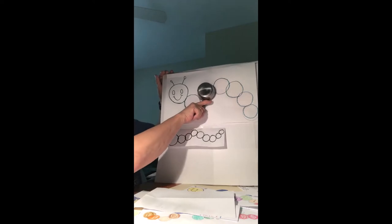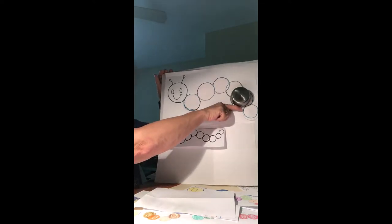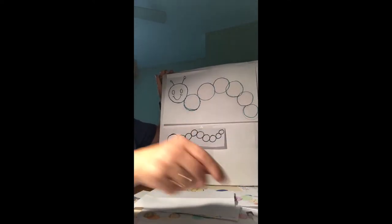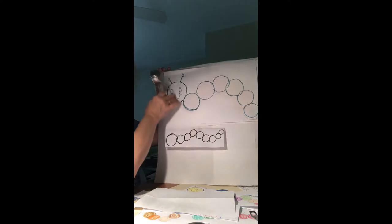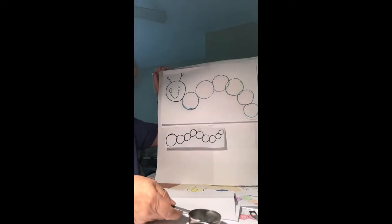Then I took a half a cup and I traced around the half a cup to make circles all the way across the page. And at the very end of the caterpillar I used a fourth of a cup to make a small circle. You can color the caterpillar with crayons, markers, or colored pencils.